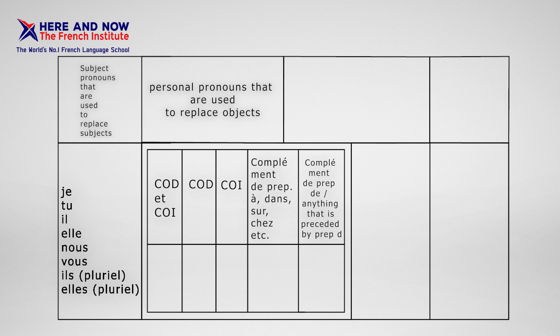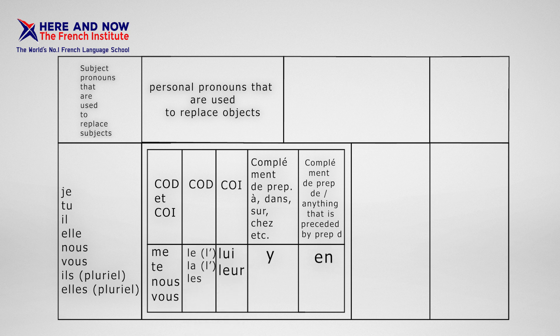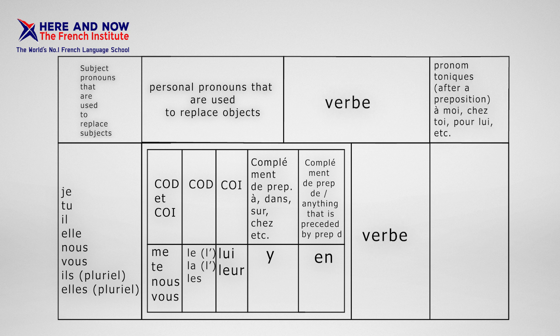Object pronouns include: 'me', 'te', 'nous', 'vous', 'le', 'la', 'les', 'lui', 'leur', and the pronouns 'y' and 'en'. Then we have the verb. And last in the order we have the pronom tonique, which is always followed by a preposition.